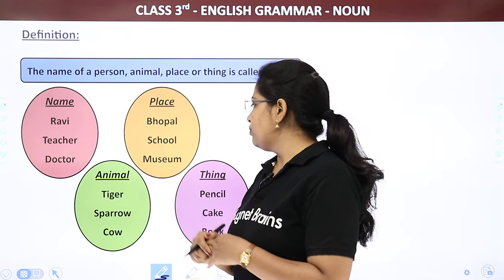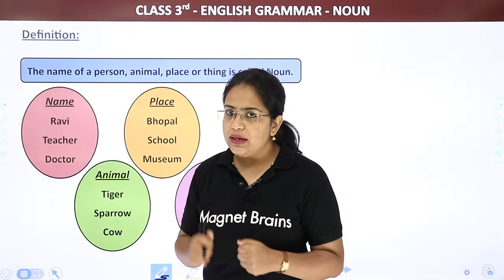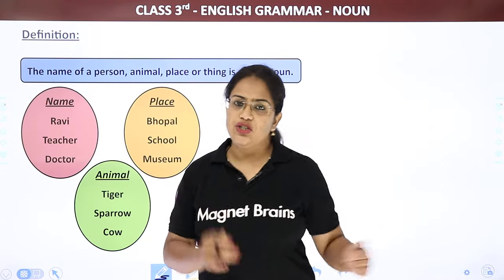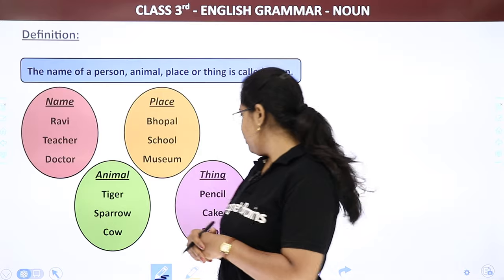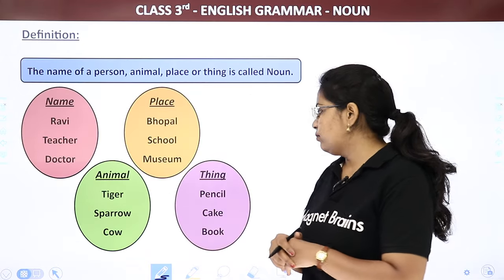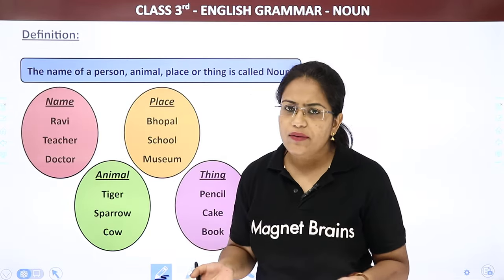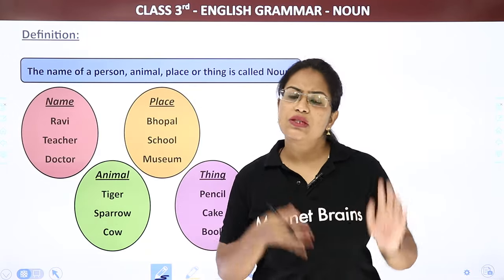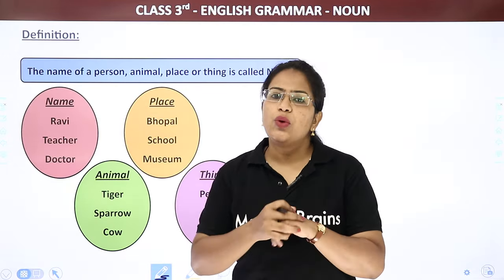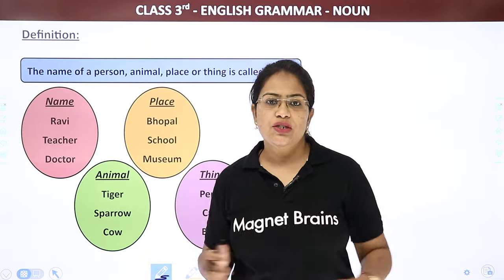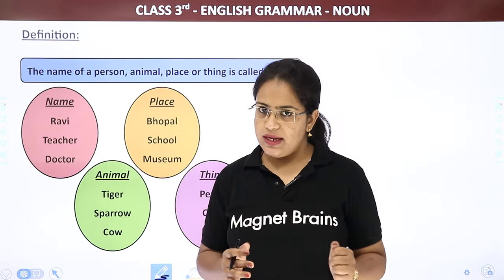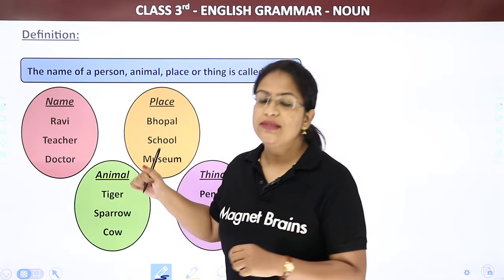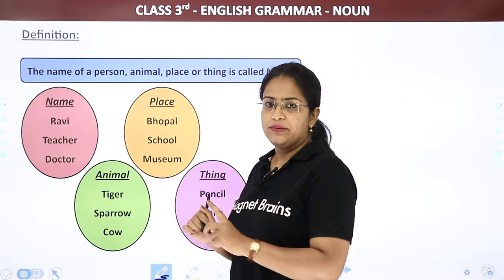Next is animal. Animal is not just animal — birds, mammals, reptiles, all creatures come under this. Thing is any non-living thing: chair, table, bed, house, car, plants — any kind of thing. So four things: name, place, animal, and thing.